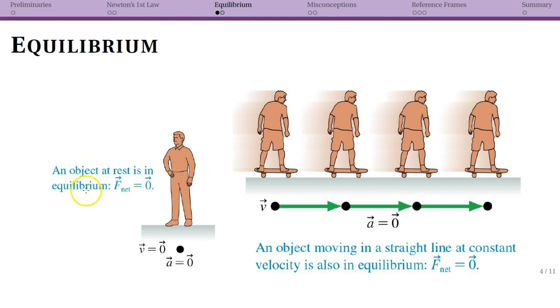We have an object that is at rest, in this case a person just standing there, and in this case velocity equals 0 and the acceleration is 0. You have an unchanging velocity and that velocity happens to be at 0.